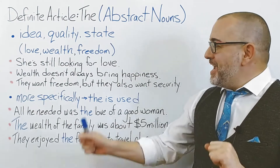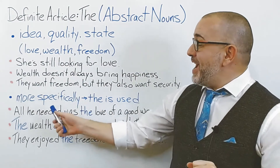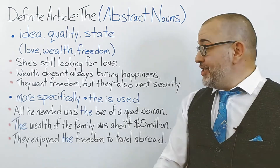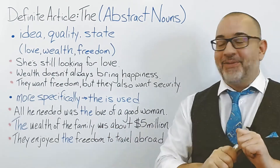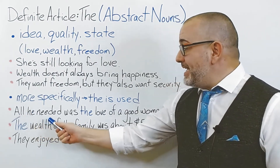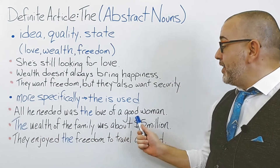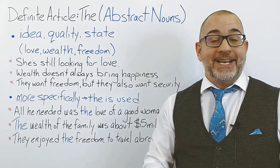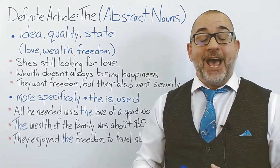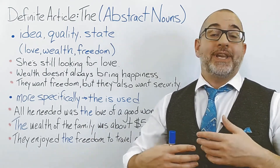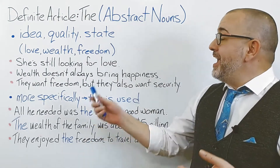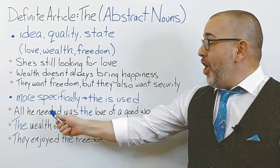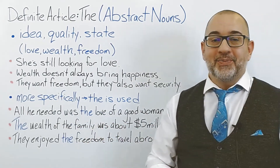But if you use these abstract nouns more specifically, then we will use 'the.' For example: All he needed was the love of a good woman. Here, we have more details. We're using this abstract noun more specifically — we know love from who. So, we are going to use the definite article, 'the.'